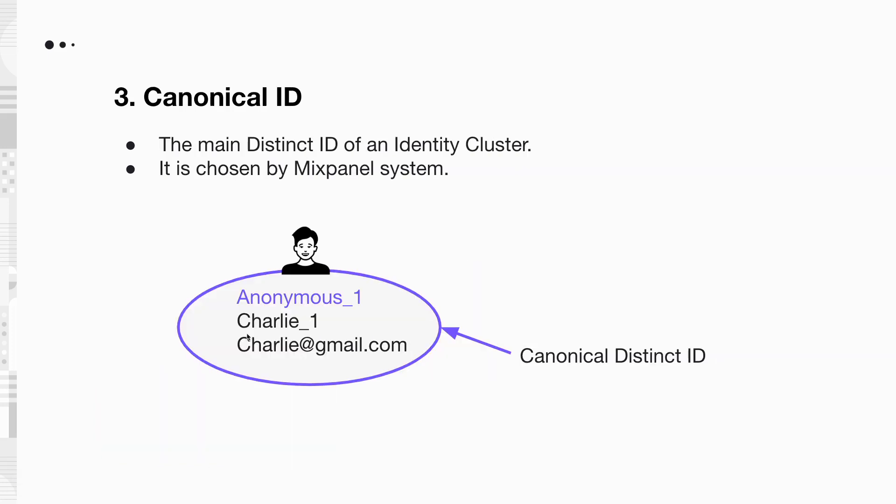Lastly, we have canonical ID. It is the main Distinct ID of an identity cluster, and it is chosen by the Mixpanel system. In this example, the anonymous_1 ID is chosen as the canonical ID of the identity cluster.